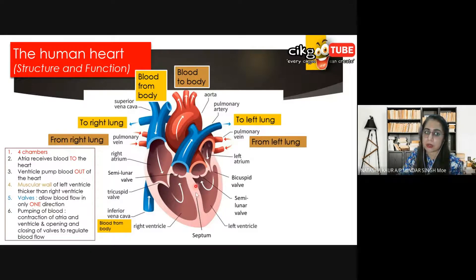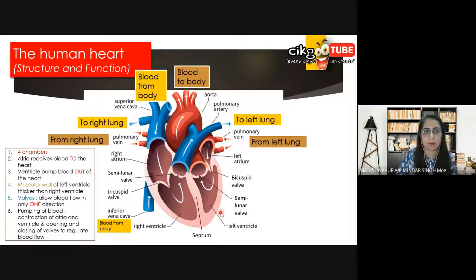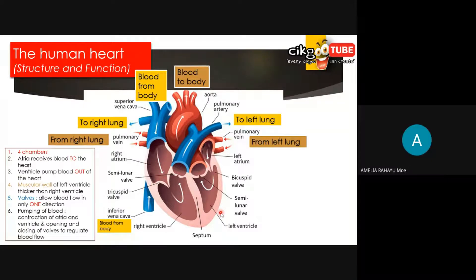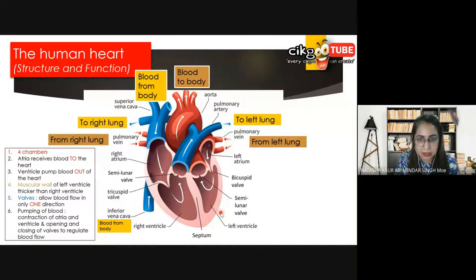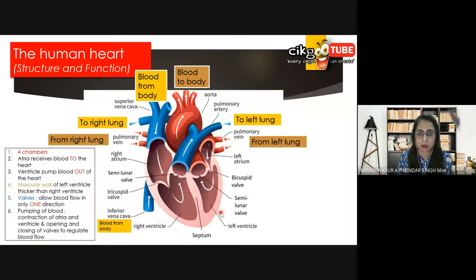In between the right ventricle and the left ventricle we have the septum. Can anyone tell me why we need this septum? So that oxygenated and deoxygenated blood do not mix up. Very good. So the septum does not allow the mixing of oxygenated and deoxygenated blood. But what if the septum has a hole in it?